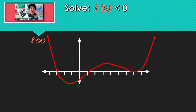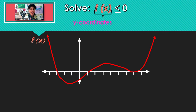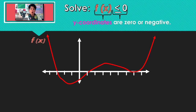So here we have that same function, and we're going to make another subtle change: less than or equal to 0. That f of x means the y, and numbers that are less than or equal to 0 are negative or 0. So we're looking for the x-values that give us a y-coordinate of 0 or negative.